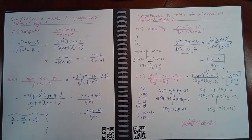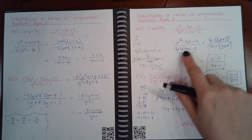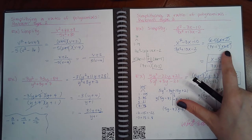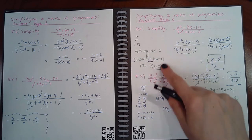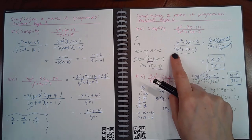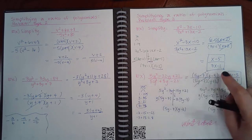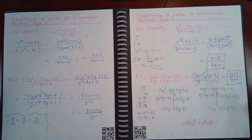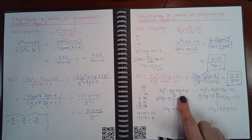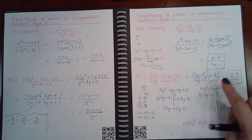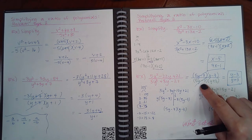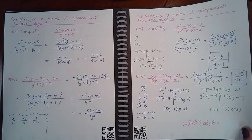Simplifying a ratio of polynomials — problem type 3. Here the numerator factors into (x − 5)(x + 2) and the denominator into (7x − 1)(x + 2). The (x + 2) factors cancel, leaving (x − 5) / (7x − 1). In the next example, using color-coding to track factors, the numerator and denominator each factor into two binomials with matching factors that cancel, leaving (y − 3) / (y + 3).